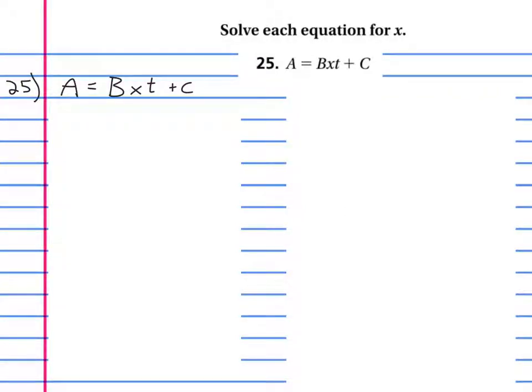Okay, we are solving each equation for x, so let's solve for x first. Let's look at this problem, say what's happening to x. Right now x is being multiplied by both b and t, and then also the c is being added at the end.